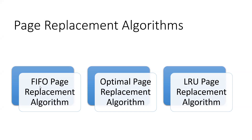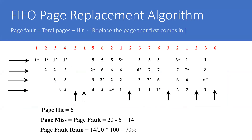There are three different types of page replacement algorithm: FIFO page replacement algorithm, optimal page replacement algorithm, and least recently used page replacement algorithm. One by one, we will discuss them — first FIFO, then optimal, and so on.